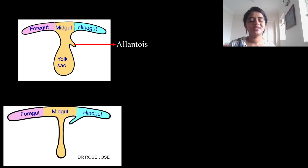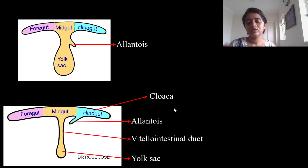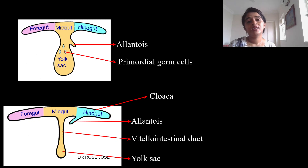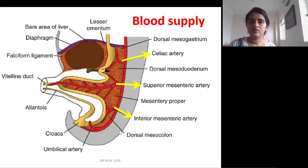The allantoic diverticulum is seen towards the hindgut. The vitelline intestinal duct, after extracting nutrients from the yolk sac, degenerates. The distal end of the hindgut is called the cloaca. Primordial germ cells arise from the yolk sac and later develop in the gonads. For blood supply, the three major vessels from the abdominal aorta are: the celiac artery for the foregut, the superior mesenteric artery for the midgut, and the inferior mesenteric artery for the hindgut. Since the duodenum is derived from both foregut and midgut, it is supplied by branches from both the celiac artery and the superior mesenteric artery.